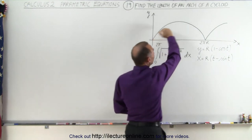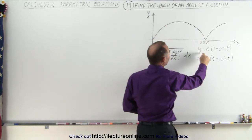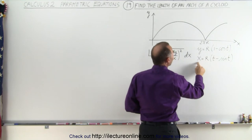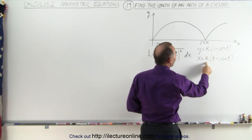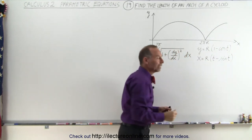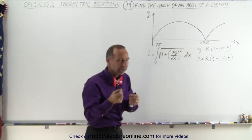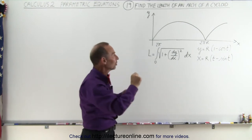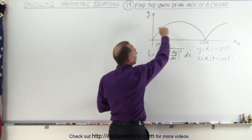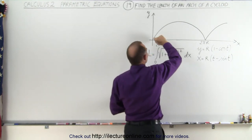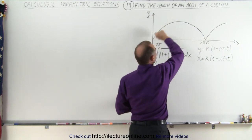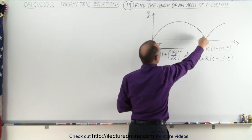The equations defining the cycloid are y = r times (1 minus cosine of t), and x = r times (t minus sine of t). t is the variable that describes the angle of a rotating circle, and the cycloid is made by having the edge of that circle rotate around the wheel as it makes one complete turn.